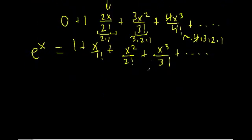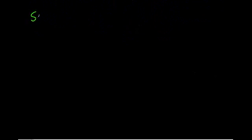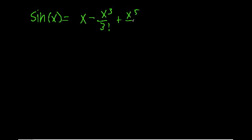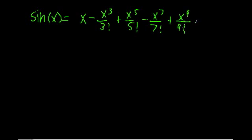Now let's see if that works with our sine and cosine. Let's rewrite the sine expression. We know that sine of x is just x minus x cubed over 3 factorial plus x to the 5th over 5 factorial minus x to the 7th over 7 factorial, plus x to the 9th over 9 factorial, and so on. Now let's take the derivative term by term of this power series.